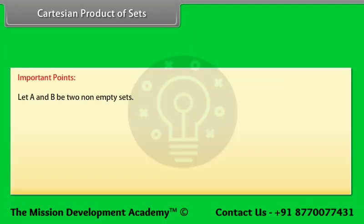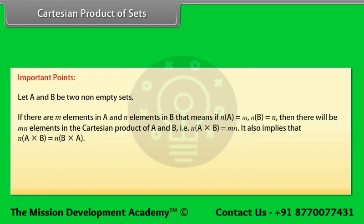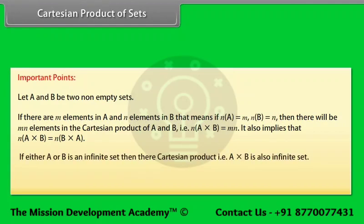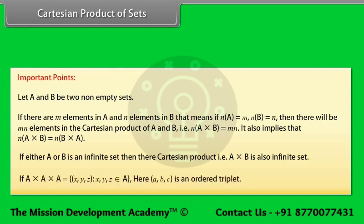Important points: Let A and B be two non-empty sets. If there are M elements in A and N elements in B, then there will be M × N elements in the Cartesian product A × B, and n(A × B) = n(B × A). If either A or B is an infinite set, then A × B is also an infinite set. A × A × A = {(x, y, z) : x, y, z ∈ A}, where (a, b, c) is called an ordered triplet.